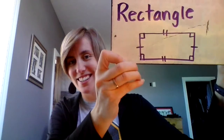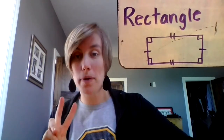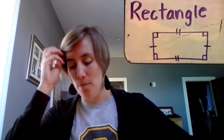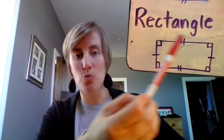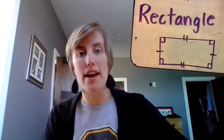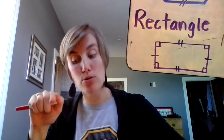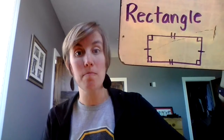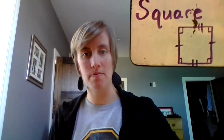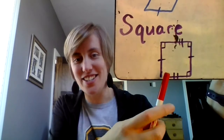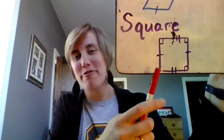Next, we have a rectangle. It has two pairs of parallel lines and two pairs of sides of equal length. The key difference here is that a rectangle has four right angles. Whenever you see two lines that meet with a little blue square inside them, that means it's a right angle. Same for the square — it has four right angles, and when you see those little squares at the corners, you know that marks a right angle.